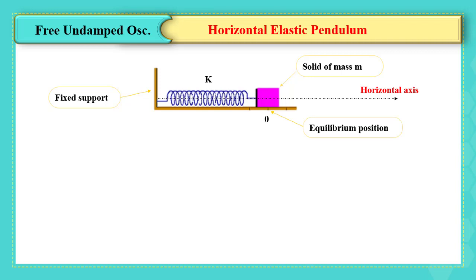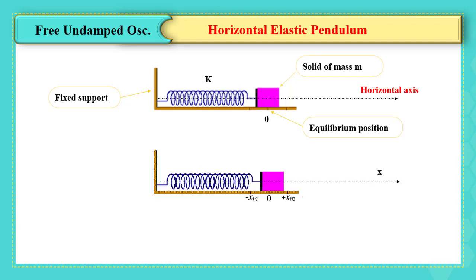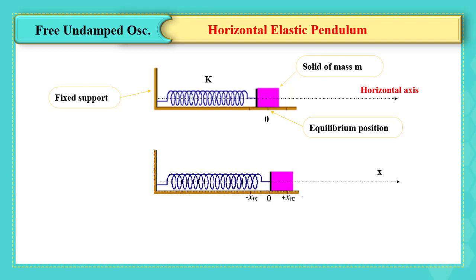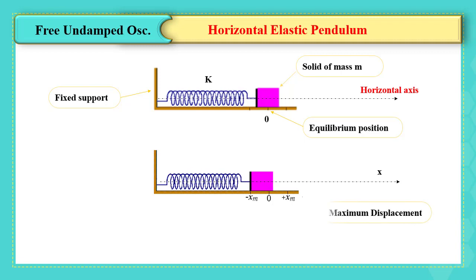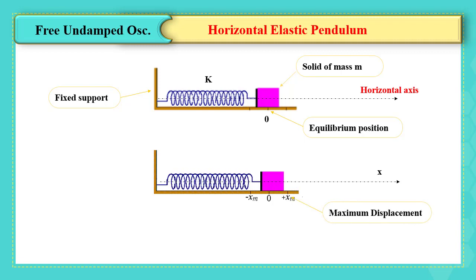To start the study of the oscillation, the solid is moved a distance x = a and then released. The maximum displacement from the equilibrium point is called amplitude. The oscillator then is in simple harmonic motion.